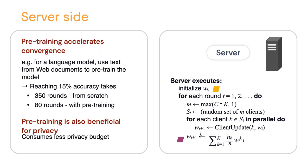Another improvement is to start with a good model. Instead of starting with random weights, if we pre-train the model with data we find somewhere — even if it's not ideal — that helps. For example, to learn a language model for English chat, we can take web documents that provide a ton of data and just pre-train the model with that. At least we then have a model of common English language, and that's already a good starting point.